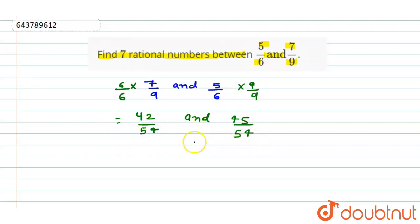So here we are getting only two numbers between them. If we multiply by 10 in numerator and denominator, then we will get more numbers. 10/10 here and 10/10 here.